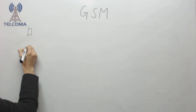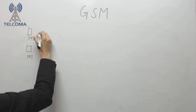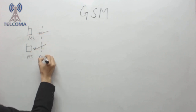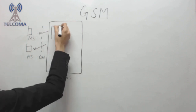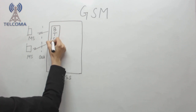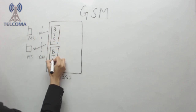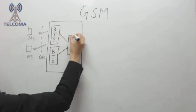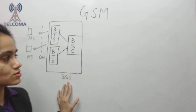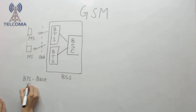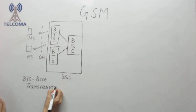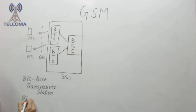The first part is the Mobile Station, which connects via the air interface to the BSS — Base Station Subsystem. Within BSS, we have BTS. This BTS is connected to a BSC. So the Base Station Subsystem comprises BTS and BSC. BTS stands for Base Transceiver Station — it can both transmit and receive. BSC is the Base Station Controller.